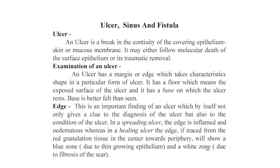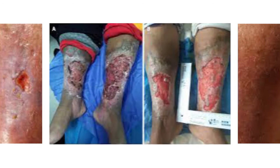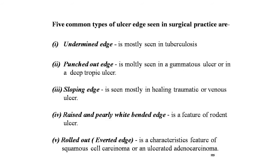There are five common types of ulcer edges seen in surgical practice. First, the undermined edge is mostly seen in tuberculosis — the disease spreads inward and destroys the subcutaneous tissues. Second, the punched-out edge is mostly seen in gummatous ulcer or deep trophic ulcer, where the edge drops down at right angles to the skin surface. Third, the sloping edge is seen mostly in healing traumatic or venous ulcers — every healing ulcer has a sloping edge which is reddish-purple in color.